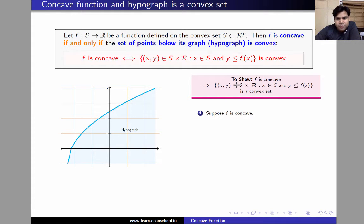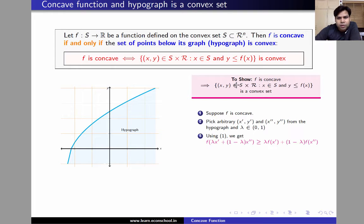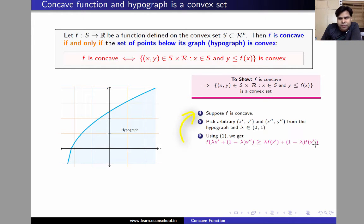Suppose f is concave. Let us pick arbitrary points (x′, y′) and (x″, y″) from the hypograph, and let lambda be in (0, 1). Using the fact that f is concave, we know that for these particular x′ and x″, f(λx′ + (1−λ)x″) is greater than or equal to λf(x′) + (1−λ)f(x″).